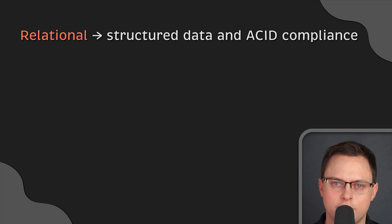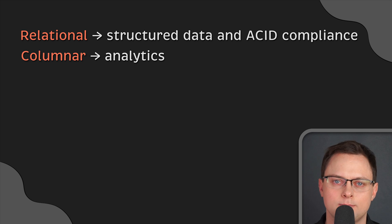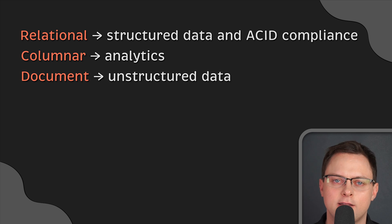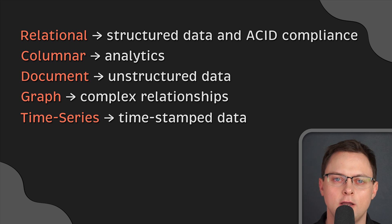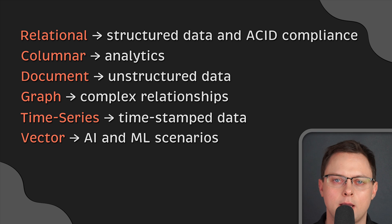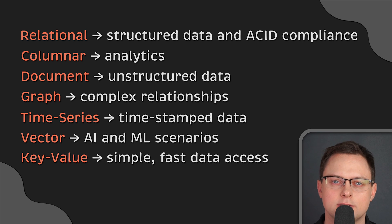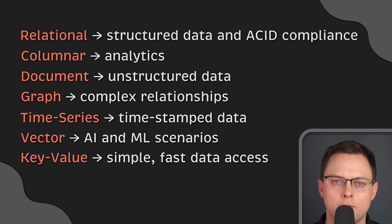Each database type has its specialty: relational for structured data and ACID compliance, columnar for analytics, document for unstructured data flexibility, graph for complex relationships, time series for timestamped data, vector for AI and ML scenarios, and key-value for simple fast data access. Using the right database type can be a game-changer for performance, and the wrong one can slow down your queries and be very expensive.